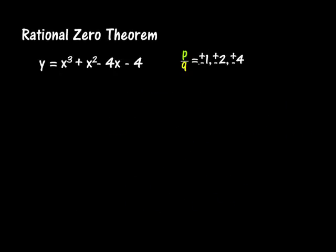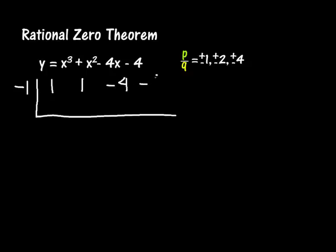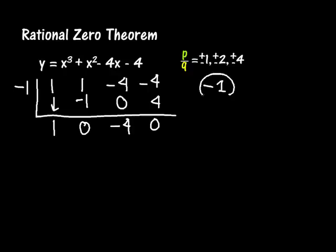Since we know these are our possible zeros, let's see which ones actually work using synthetic division. First, let's try negative 1. Our coefficients are 1, 1, negative 4, and negative 4. Bring down the 1. 1 times negative 1 is negative 1, that adds to 0. Negative 1 times 0 is 0, that adds to negative 4. Negative 1 times negative 4 is 4, and that adds to 0. So negative 1 is one of my zeros.